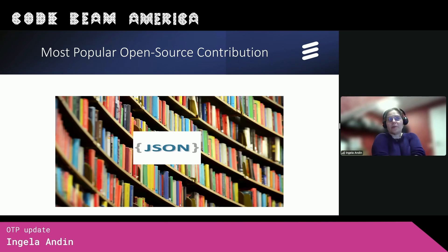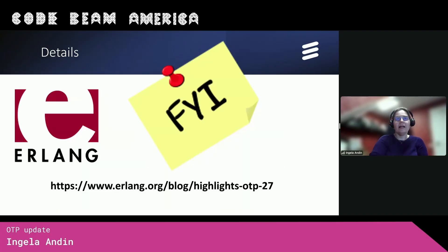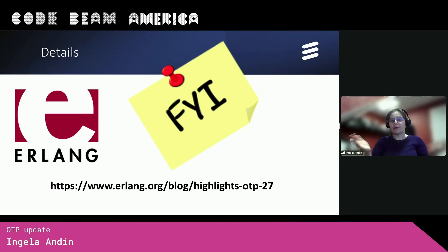The most popular open source contribution to OTP-27 was the JSON encoding and decoding module that was contributed by Michał at WhatsApp. So thank you very much, Michał, for that contribution. If you want to know more details of the OTP-27 release, you can have a look at our blog.